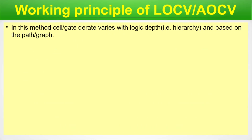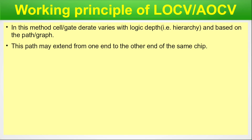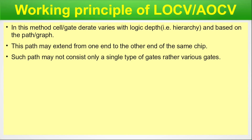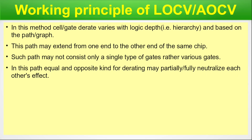Working Principle of LOCV or AOCV. In this method, the cell or gate varies with logic depth — that is, hierarchy — and based on the path or graph. Logic depth means that if gates or blocks are connected and we go inside a block, we have a sub-block, giving us logic depth or hierarchy. This path may extend from one end to the other end of the same chip. A path may not consist of only a single type of gate; rather, it contains various gates, as the design will contain multiple types of gates inside the silicon wafer.